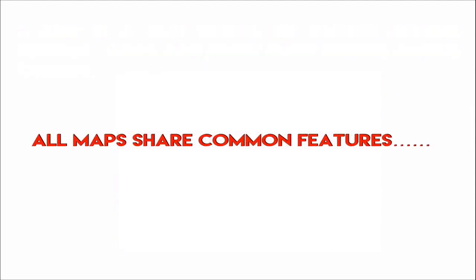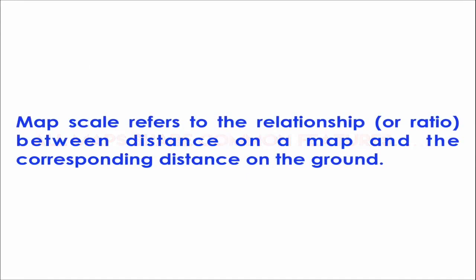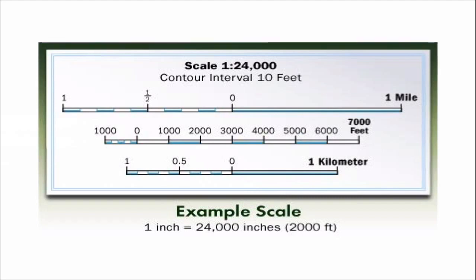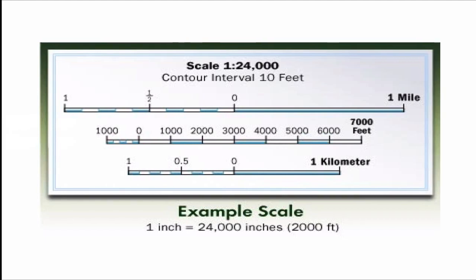All maps share common features. Map scale refers to the relationship between the distance on a map and the corresponding distance on the ground. You've probably seen this before on a map, located in the bottom right-hand corner. Because maps aren't life-sized and they're scaled, one measurement on the map is going to be equal to a larger measurement in the real world. The first number is always one — typically something like one inch. The second number is the ground distance. So for this map, one inch on the map equals 24,000 inches on the ground.